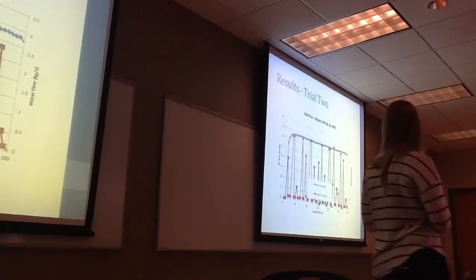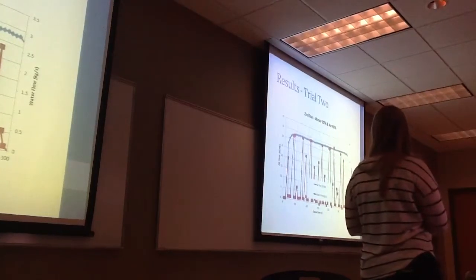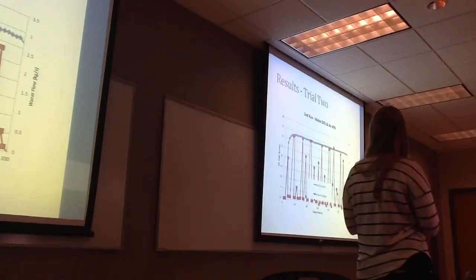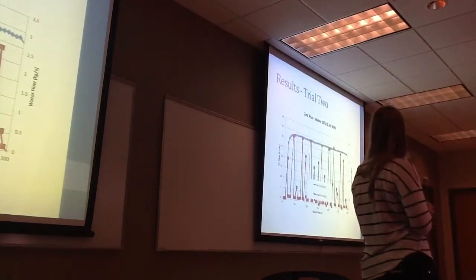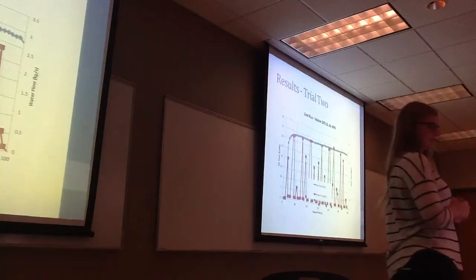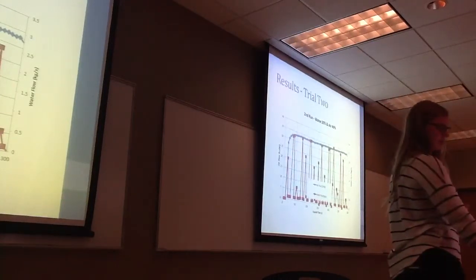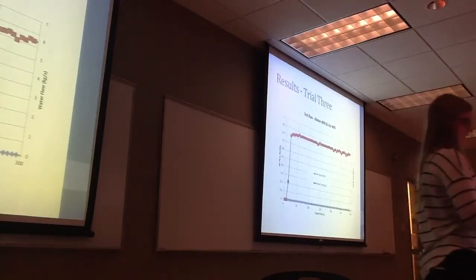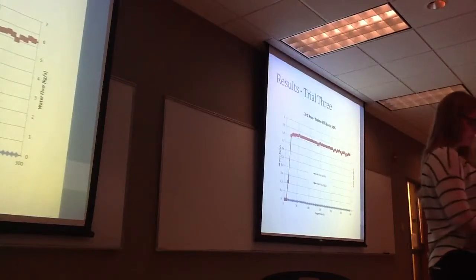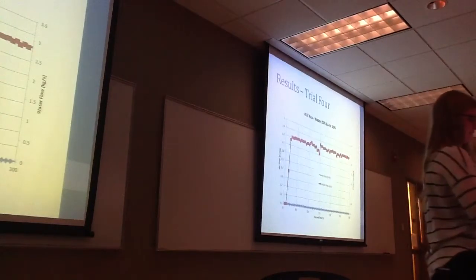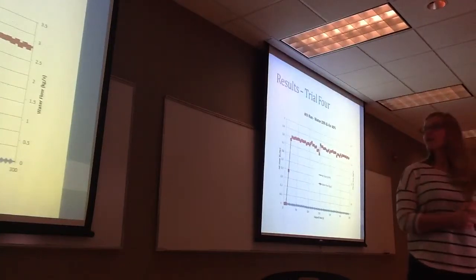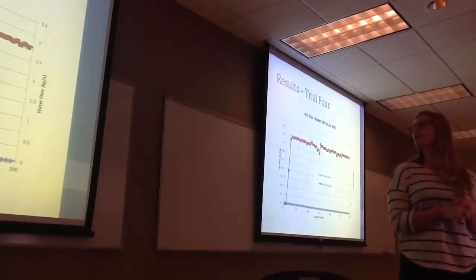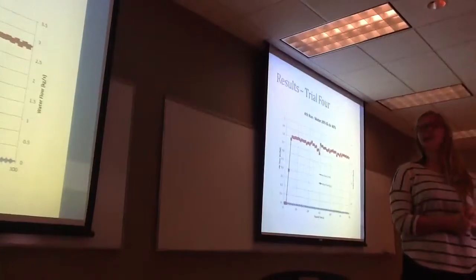So here's the water flow. The water flows all over the place, and our airflow is pretty constant. We did not change anything on the column. We just changed it on the LabVIEW, the valve, and that's what happened for our third trial. So then we changed it one more time with water at 20%, and still we obtained no airflow. We worked on it for quite a while longer and was still not able to regain airflow.